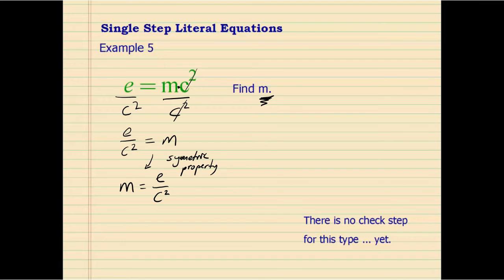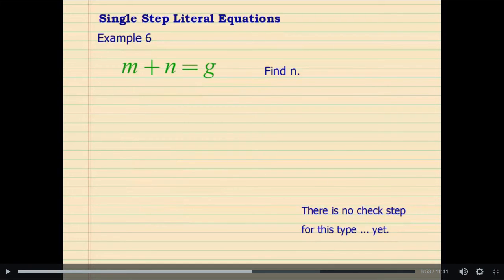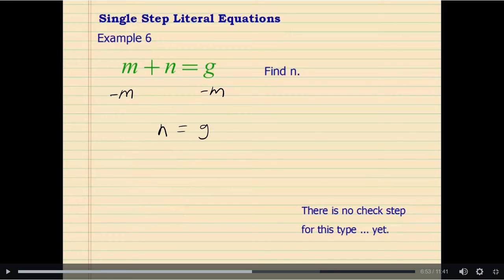There is another example here. Check steps exist for literal equations but we are not going to cover them yet. In this example, M plus N equals G. To find N, we are going to undo everything next to N. N was added by M, so we are going to undo that addition by subtracting M — adding negative M — to each side. These add to zero, and N equals G minus M is the final answer.